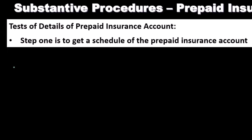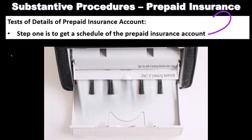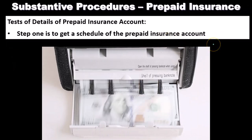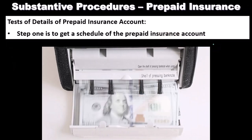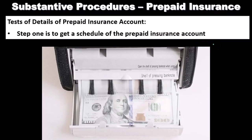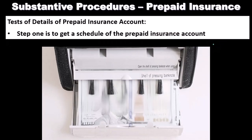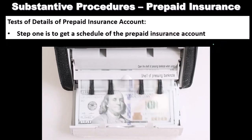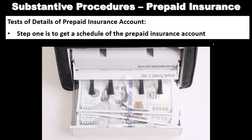Test of details of prepaid insurance accounts: step one is to get a schedule of the prepaid insurance account. We'll need to know when payments are going to be made, and we'll probably also need the policy. If we get the trial balance, we're going to look at prepaid and then pull the GL account.